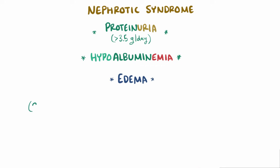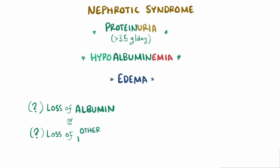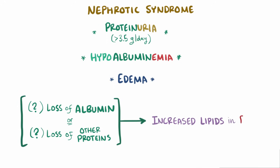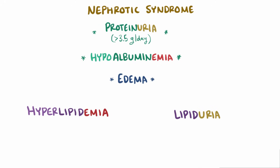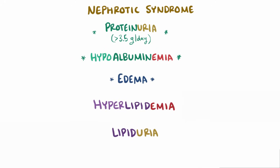Finally, it's thought that as a result of either losing albumin or losing some protein or proteins that inhibit the synthesis of lipids, or fat, you get increased levels of lipids in the blood, called hyperlipidemia. Just like the proteins, these lipids can also get into the urine, causing lipiduria. And those are the hallmarks of nephrotic syndrome — proteinuria, hypoalbuminemia, edema, hyperlipidemia, and lipiduria.